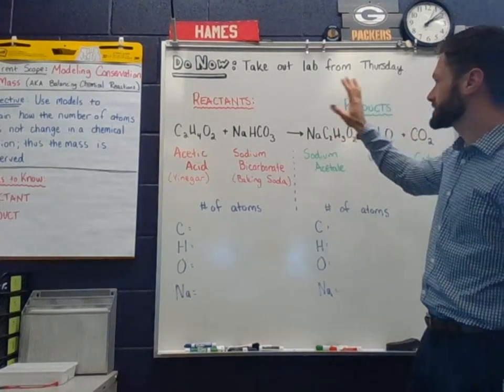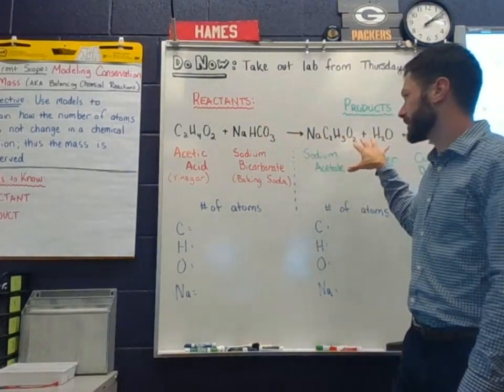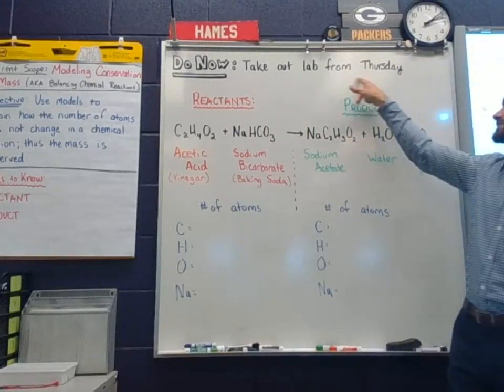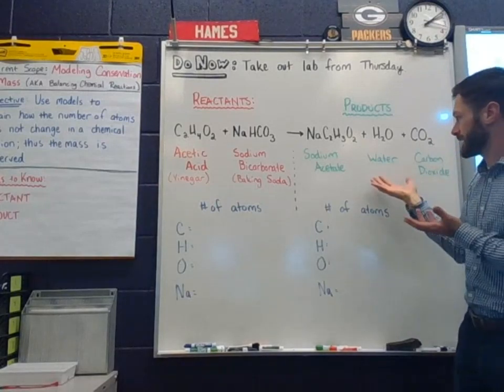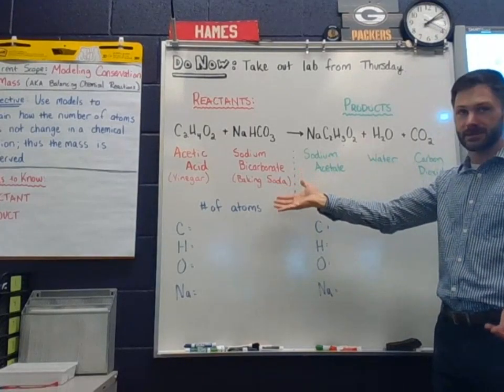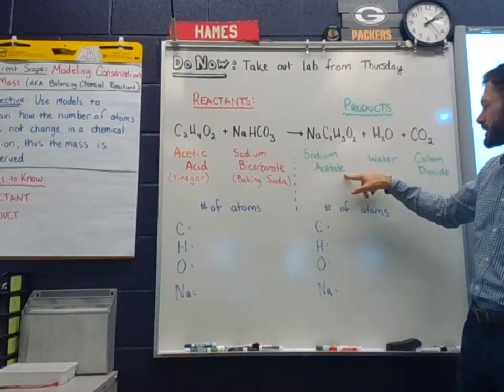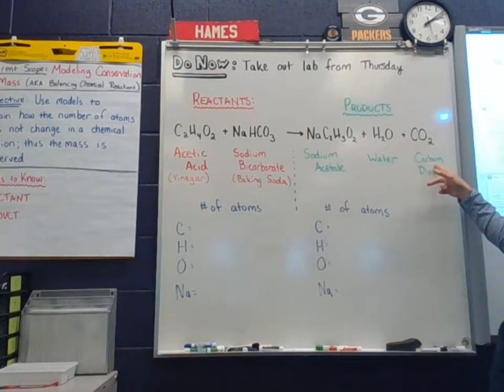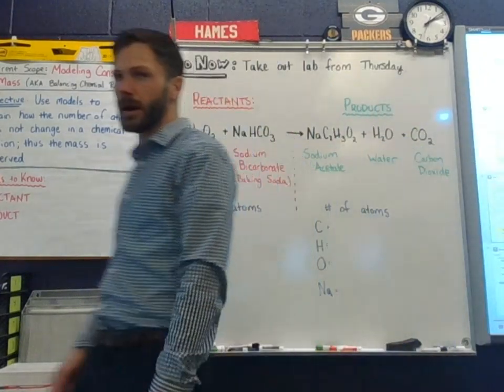So these are our reactants, the substances that we're combining to see what kind of reaction is produced. Whatever's produced is called your products. What is now existing as a result of your reactants reacting. These are your products. We have something called sodium acetate, water, which is just H2O, and then the gas carbon dioxide, which we talked a little bit about.